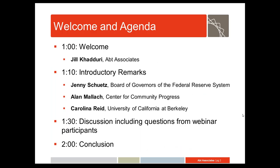With me as panelists for this webinar are three people who have done a great deal of thinking, research, and writing about the dynamics of neighborhoods and about interventions to help neighborhoods recover from distress. Jenny Schutz is an economist in the Consumer and Community Affairs Division of the Board of Governors of the Federal Reserve System. Prior to joining the Fed, she was a faculty member at the University of Southern California and was a senior member of the research team that evaluated NSP.